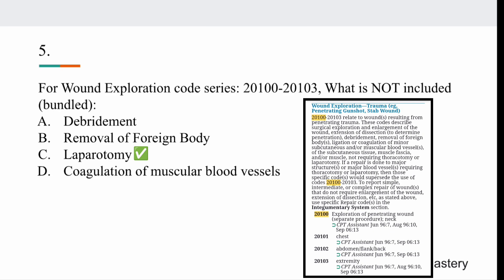Laparotomy is not included, so the right answer is option C. The CPT manual states that if a repair is done to a major blood vessel requiring thoracotomy or laparotomy, those specific codes would supersede the use of codes 20100 to 20103. This means laparotomy is a major separate surgical procedure — it is not part of wound exploration and must be coded separately if performed. Make a note of this.